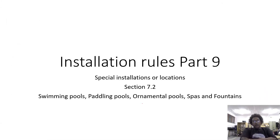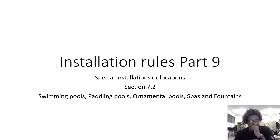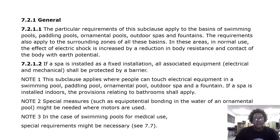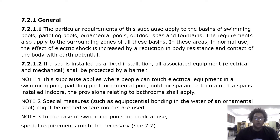We are on installation rules part 9, where we talk about special installations or locations, Section 7.2: swimming pools, paddling pools, ornamental pools, spas and fountains. The particular requirements of this sub-clause apply to the basins of swimming pools, paddling pools, ornamental pools, outdoor spas and fountains, as well as the surrounding zones. In these areas, in normal use, the effect of electric shock is increased by a reduction in body resistance and contact of the body with earth potential.